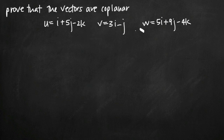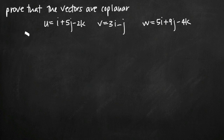How do we prove that these three vectors lie in the same plane? The easiest way is to find the scalar triple product of these three vectors. If the scalar triple product is equal to zero, that's proof that the vectors are coplanar. This is because the scalar triple product gives us the volume of the parallelepiped figure defined by these three vectors.